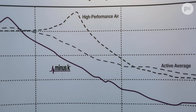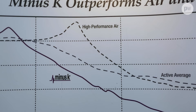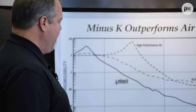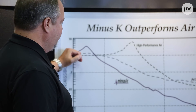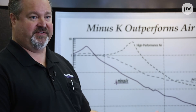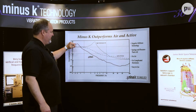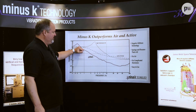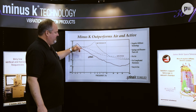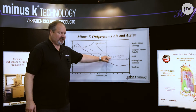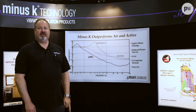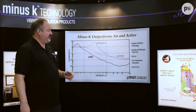We're between 100 down to 10 times higher performance than typical air systems. Active systems try to emulate what we're doing — we just let physics do it. Consequently, we can actually outperform them for a couple of other reasons as well, but they can't typically get down to the level of attenuation that we do.